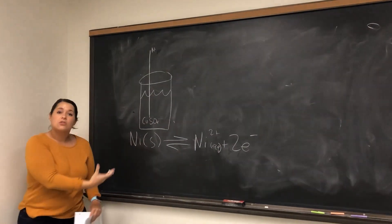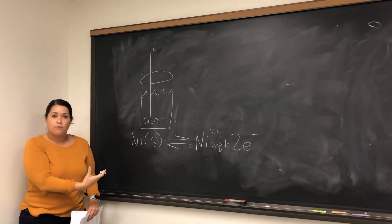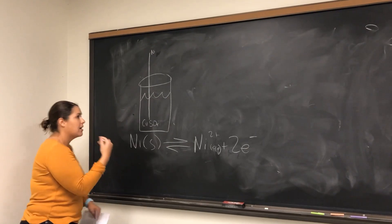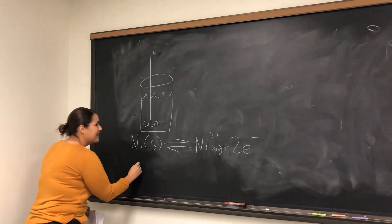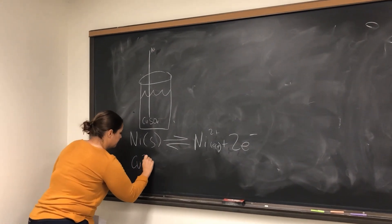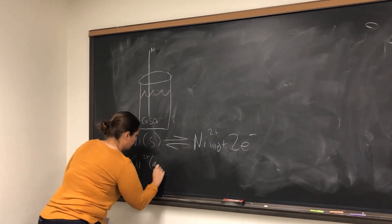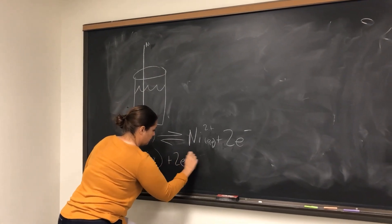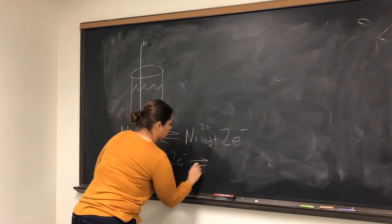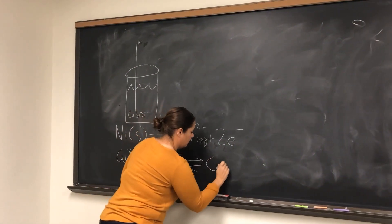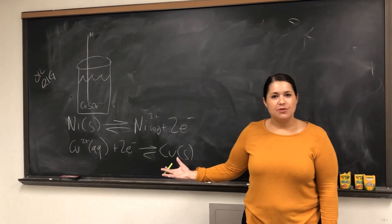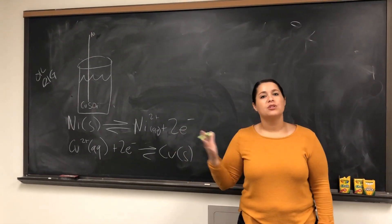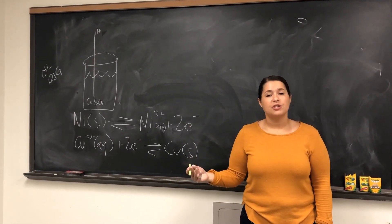The copper is starting in aqueous form and it's depositing, so it's going the opposite direction — copper 2+ plus 2e− goes to copper solid. Now we have our two half reactions and we need to decide which one is our oxidation and which one is our reduction.